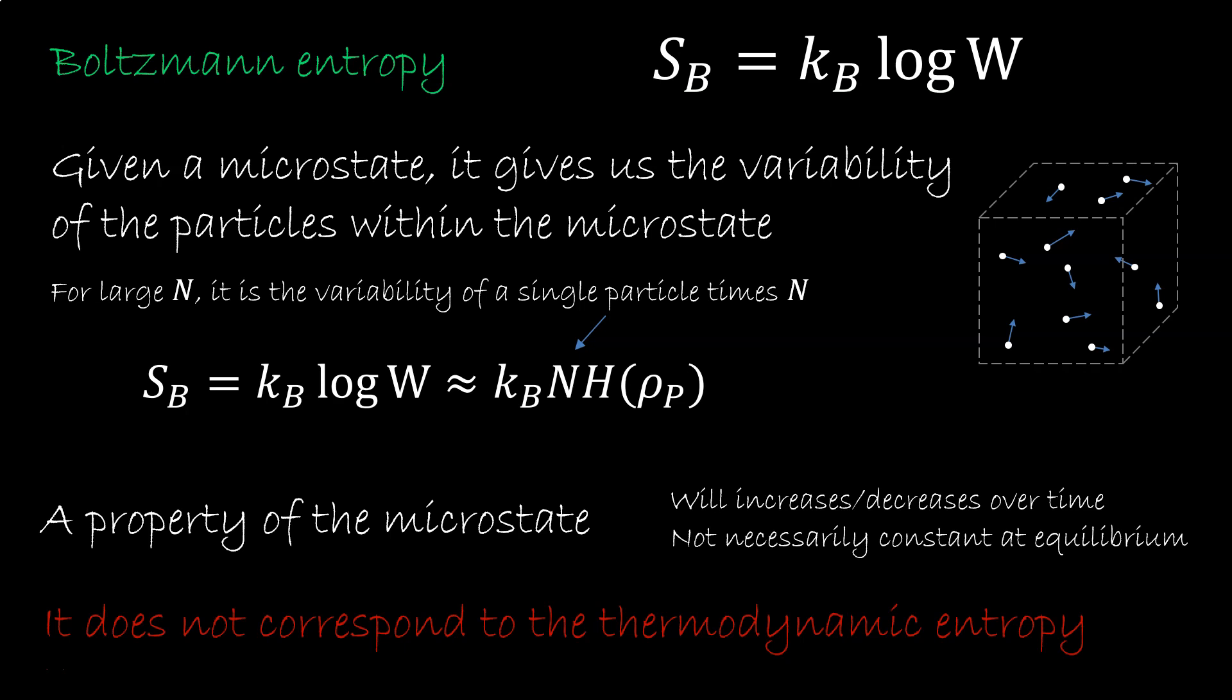But there is no equilibrium microstate, therefore there is no equilibrium Boltzmann entropy. This is extremely important to understand because there is a lot of literature, especially old literature, that assumes it does, which leads to a lot of misconceptions. So always make sure to understand what people are talking about.